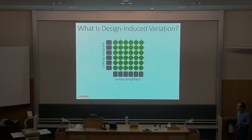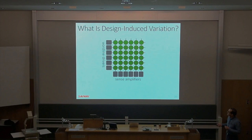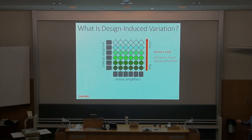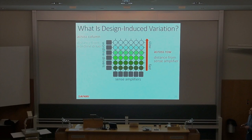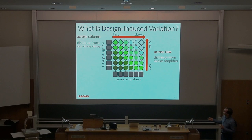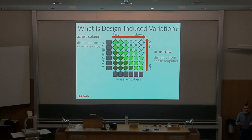Design-induced variation happens in many regular components. In a sub-array, some cells are inherently slow and some are inherently fast. For example, if you're closer to the sense amplifiers, you're inherently fast because charge flows very quickly. If you're farther away, you're inherently slow due to longer interconnect. Similarly, distance from the word line driver affects speed — things closer to the word line drivers can be accessed much faster; things farther away require longer access times.